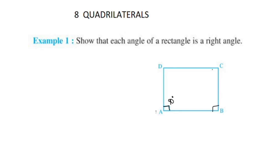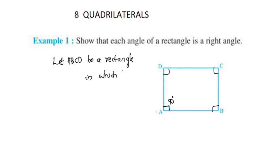We will prove that angle B, angle C, and angle D are each 90 degrees. Let ABCD be a rectangle in which angle A is equal to 90 degrees. We have to show that angle B is equal to angle C is equal to angle D is equal to 90 degrees.